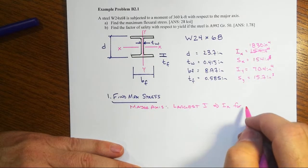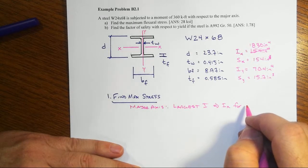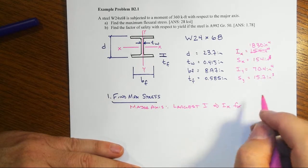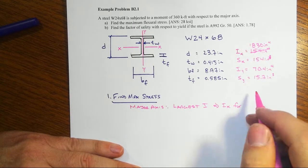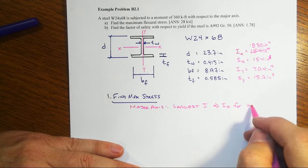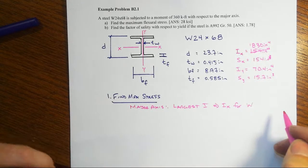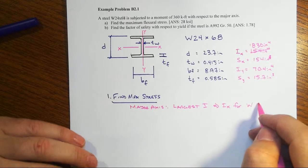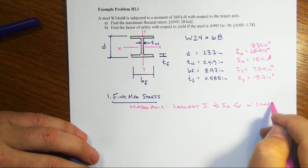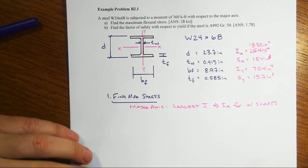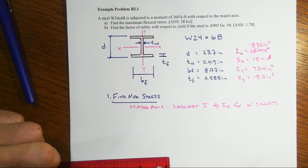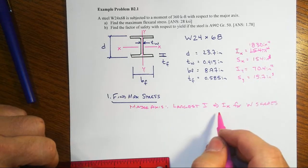Well, always except for where it isn't. There are some very unusual, very heavy column shapes for industrial power plants that might not turn out to be that way. So you do have to pay a little bit of attention. But for almost all W shapes, IX is the major axis — it's always the largest I no matter what.